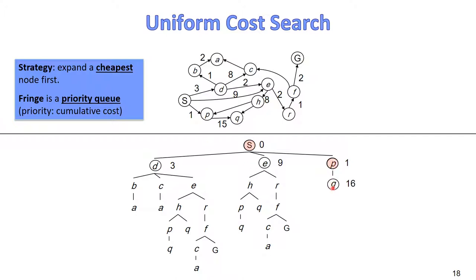P will be expanded into Q. Now we have Q, E, and D in the fringe. The cost of Q is 16 — S to P is 1 and P to Q is 15, so the total is 16. The next state to expand is D, with cost 3, which is the cheapest. We expand D into B, C, and E.